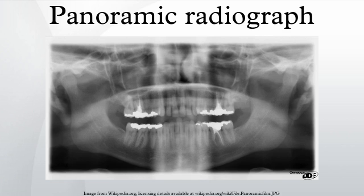A panoramic radiograph is a panoramic scanning dental X-ray of the upper and lower jaw. It shows a two-dimensional view of a half circle from ear to ear. Panoramic radiography is a form of tomography; images of multiple planes are taken to make up the composite panoramic image, where the maxilla and mandible are in the focal trough and the structures that are superficial and deep to the trough are blurred.